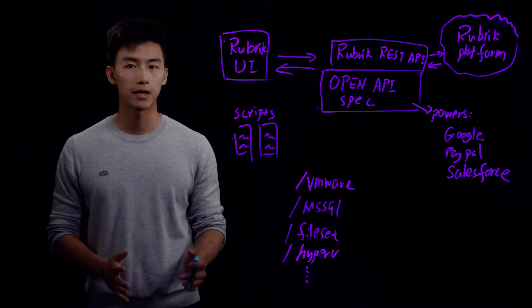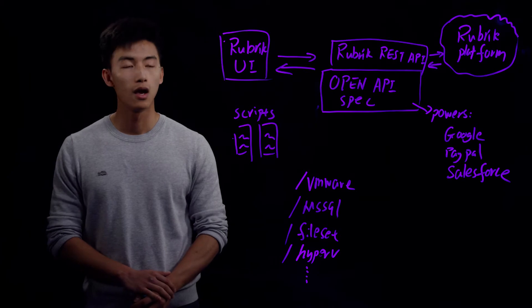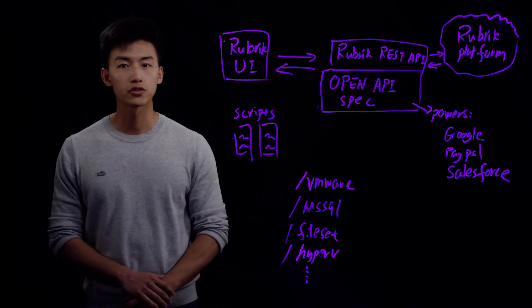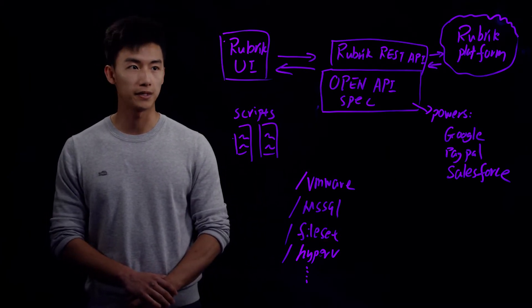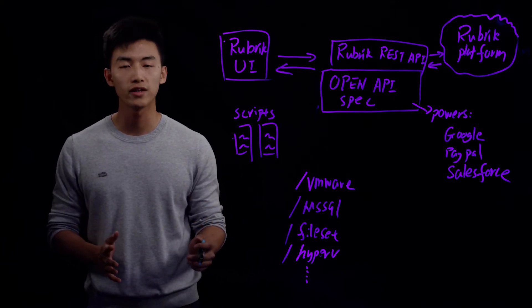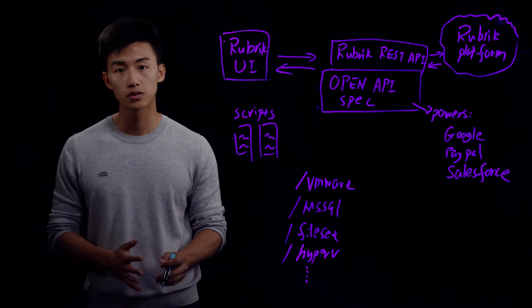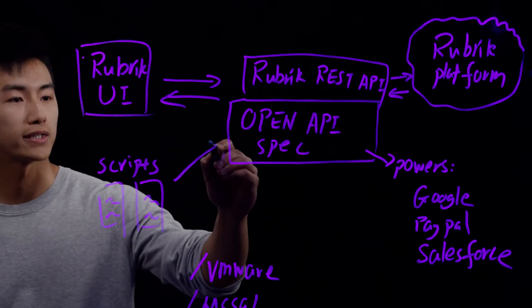From day one, Rubric Platform is built with an API-first approach. Our awesome Rubric UI actually consumes our own RESTful API. That means everything you see on the Rubric UI and all the actions you can take there, you can actually do the same by writing your own scripts against the Rubric REST API.